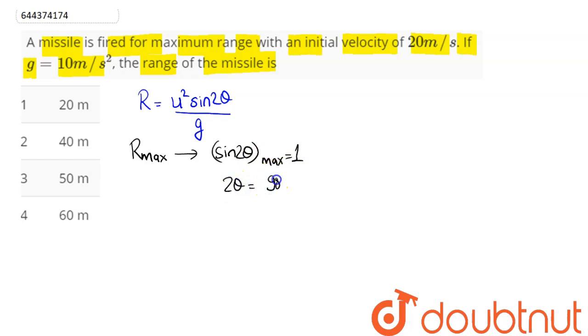So we can say here maximum range of this missile will be equal to u squared by g. Now value of u here is 20, value of g we have is 10.